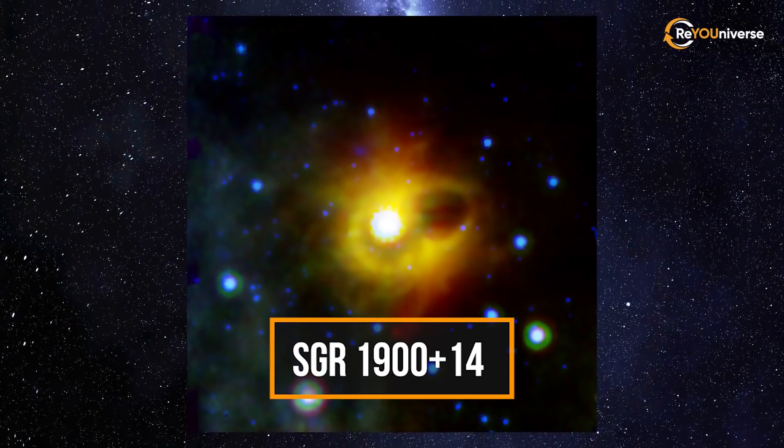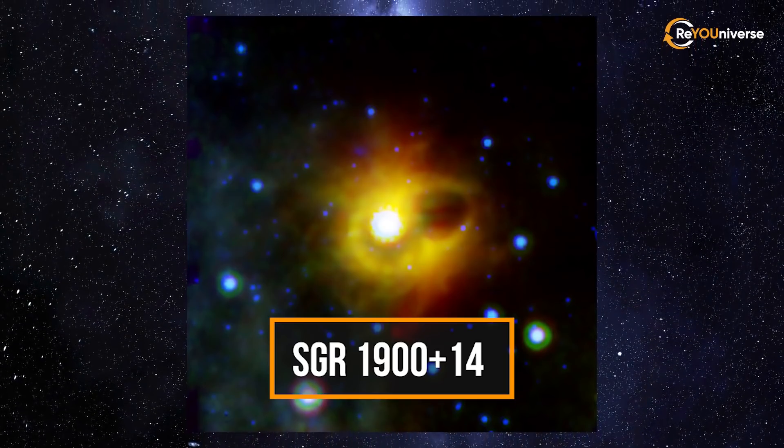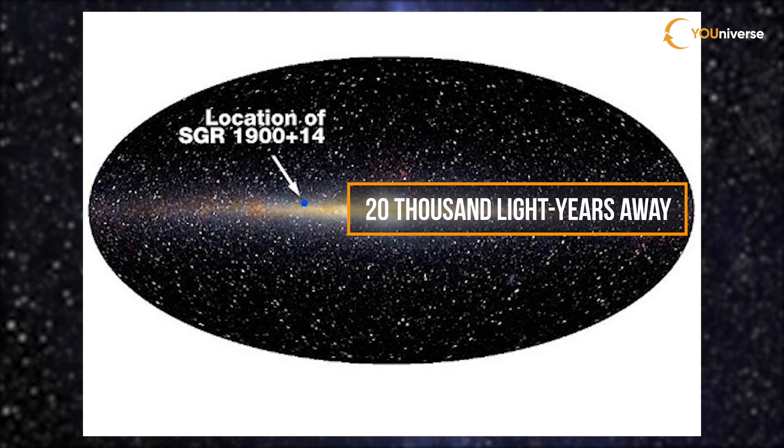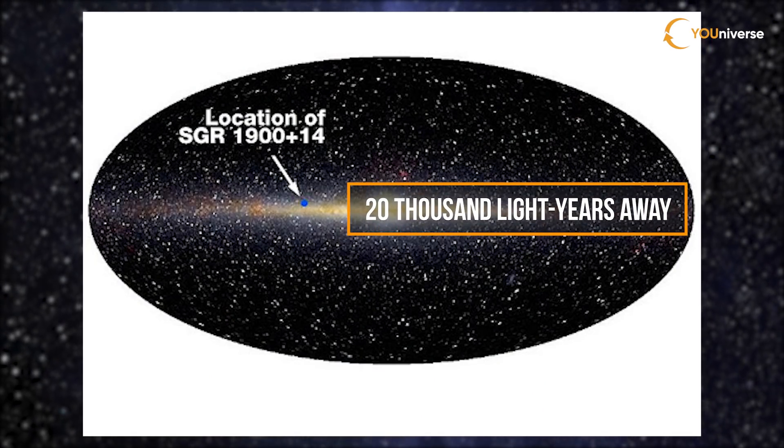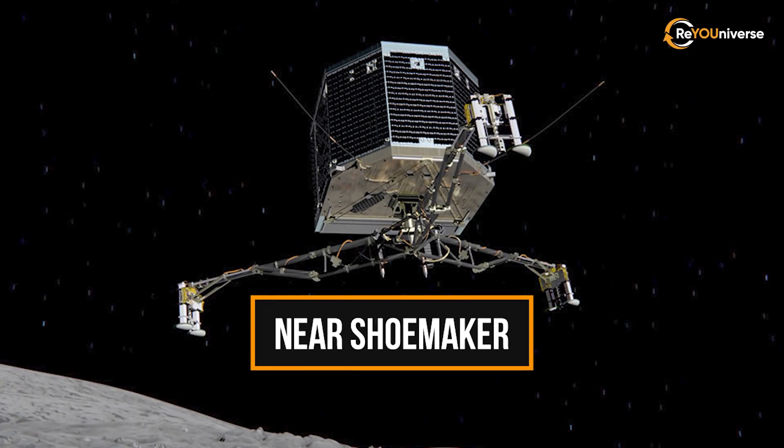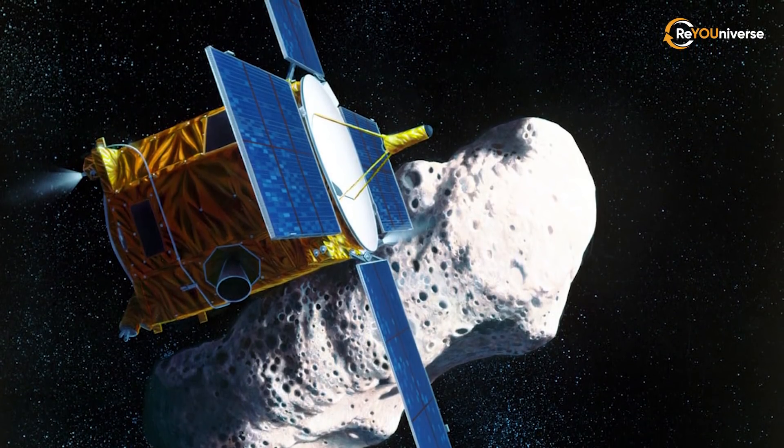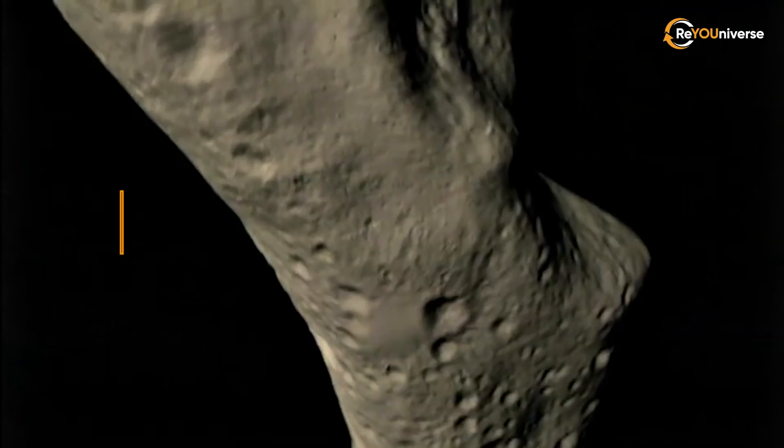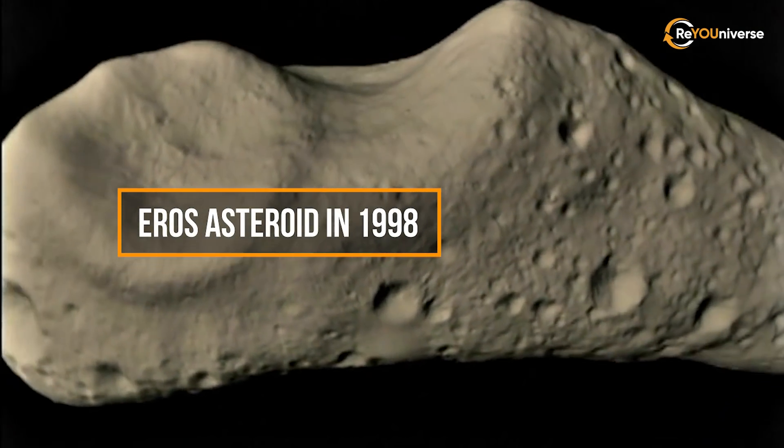The SGR 1900 plus 14 magnetar, located merely 20,000 light-years away, even forced NASA to shut down the near-Shoemaker automatic interplanetary station sent to the asteroid Eros in 1998.